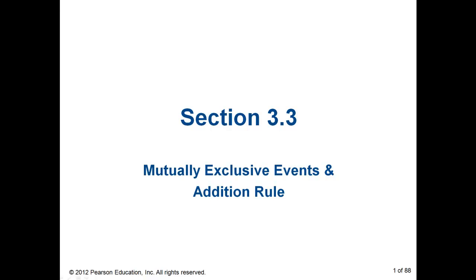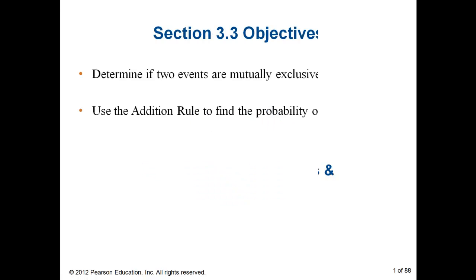In section 3.3, we're going to look at two things. The first is the definition of events being mutually exclusive, and the second is using the addition rule to find the probability of two or more events.